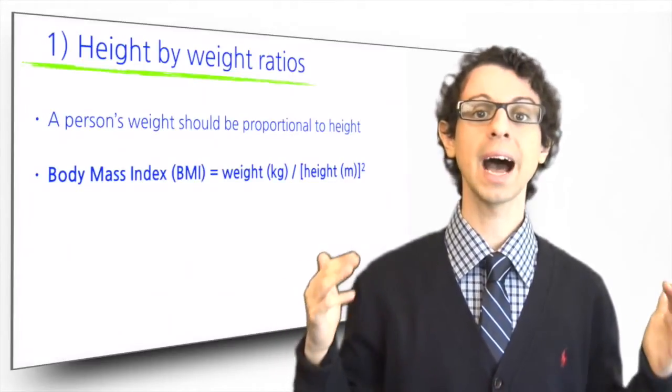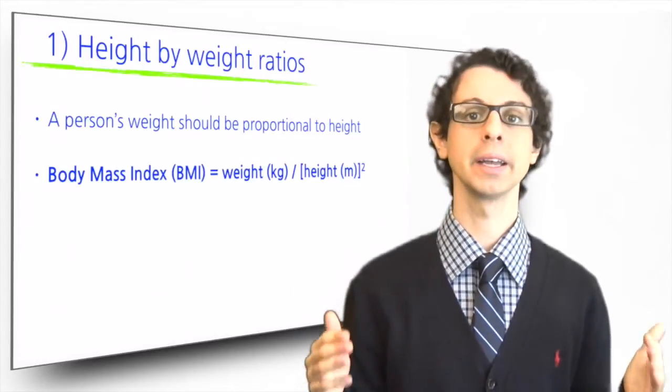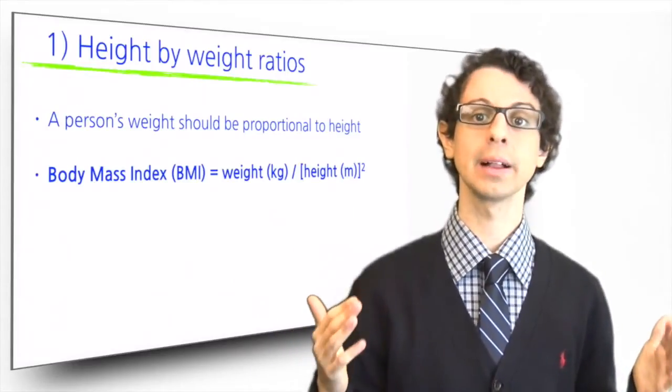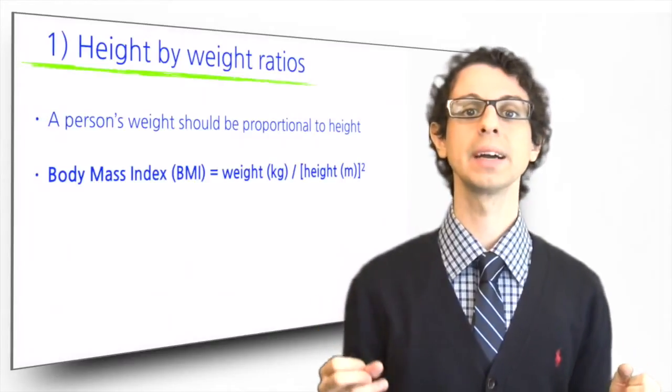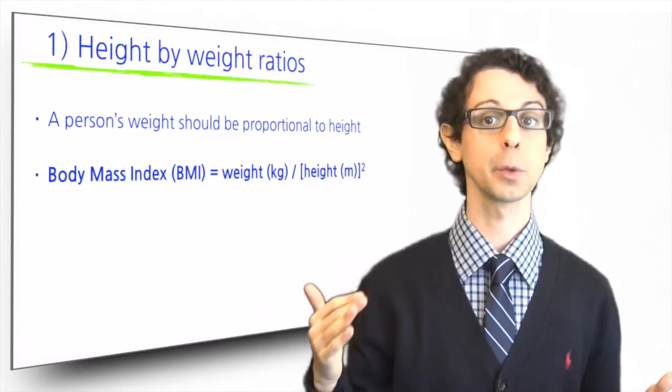The most important height by weight indicator is the body mass index or BMI, which is widely used because it is very easy to calculate and predicts fairly well risk of mortality. You can calculate your BMI by taking your weight in kilograms and dividing it by your height in meters squared.